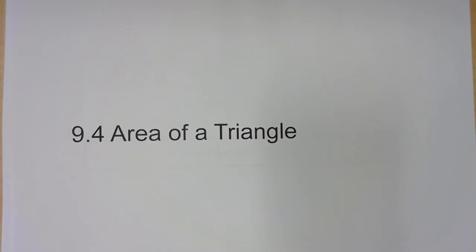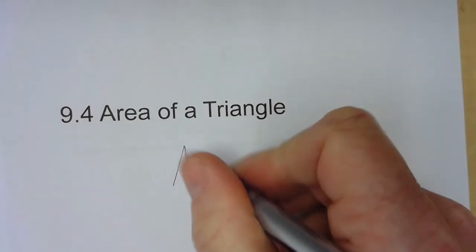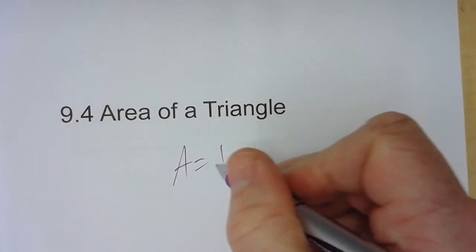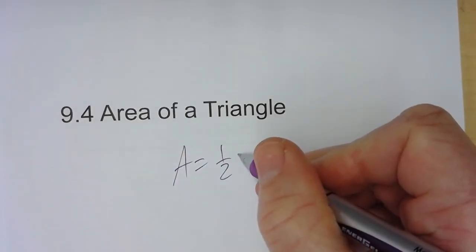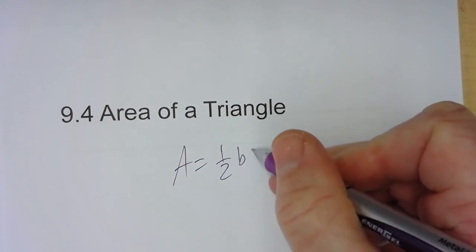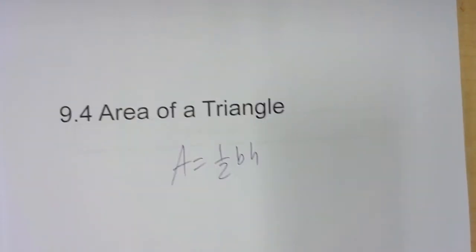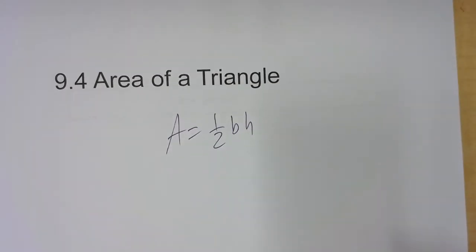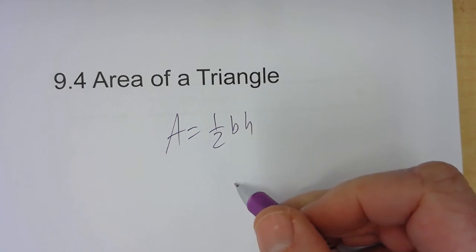In section 9.4, we get to find the area of different triangles, and we get to use something more than just one-half base times height. In a traditional triangle, it's one-half the base times the height. And where that comes from is the fact that every triangle is really just half of a parallelogram.